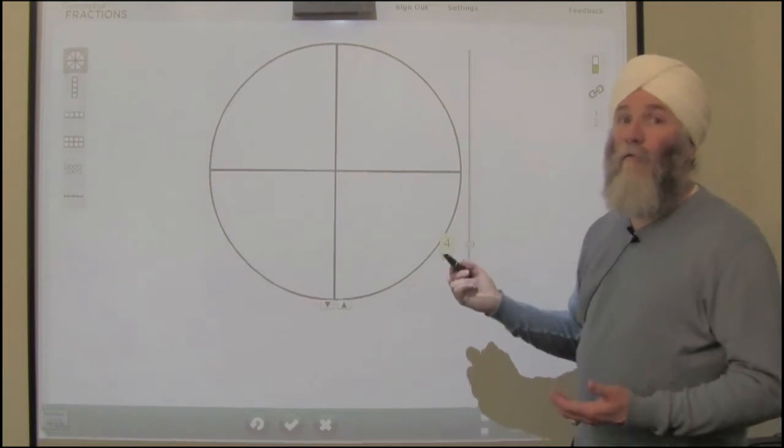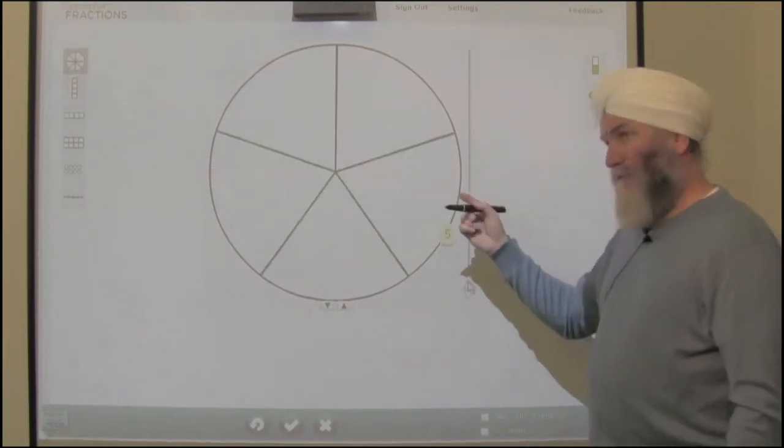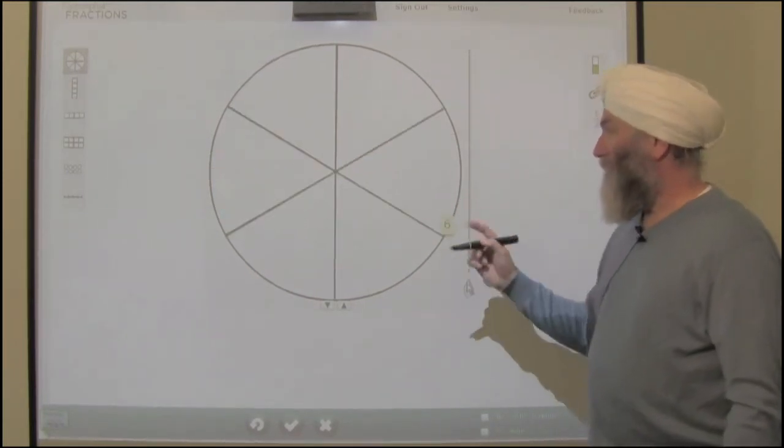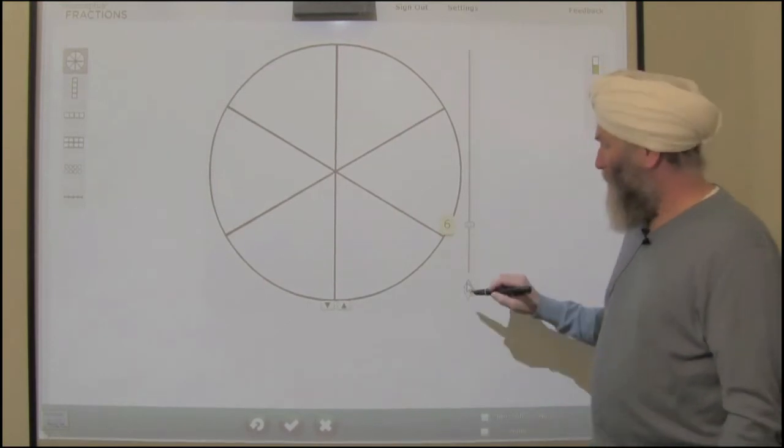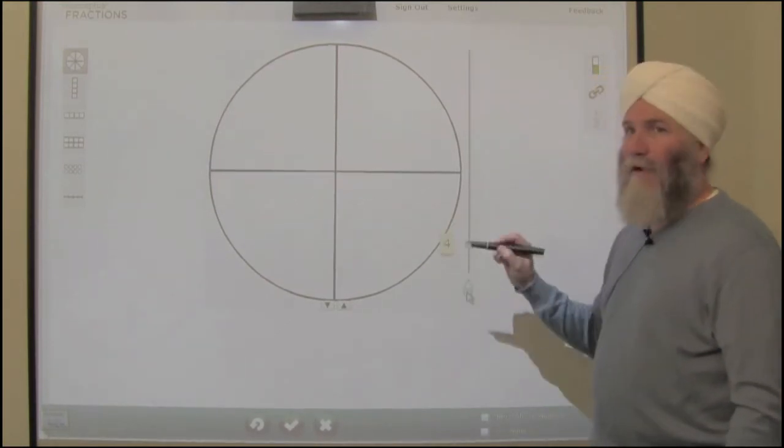Four equal parts, fourths. Here's fifths and here we have sixths. Let's go back to the fourths because that's the way we divided up the cookie.